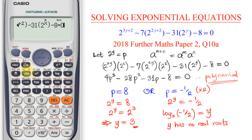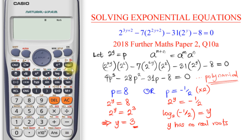I press shift-calc and input 7 as the initial value for the iteration process. I press equal, and the calculator gives me x equals 3. That is because I used a correct initial value — this is where understanding the iterative algorithm the calculator uses becomes very useful for you as a student.